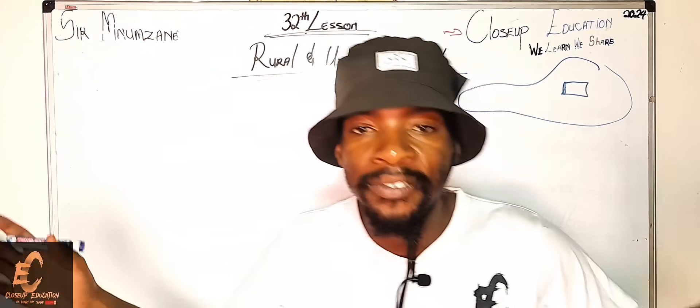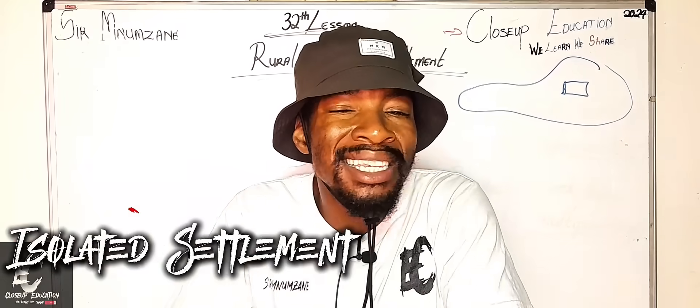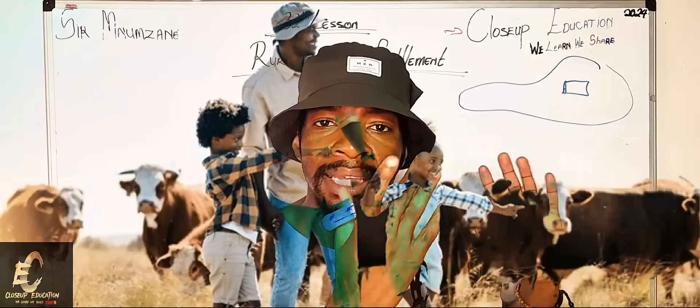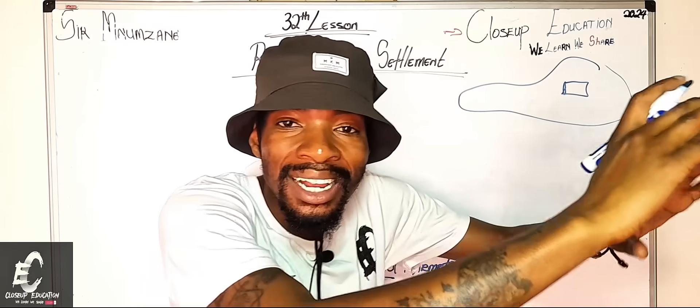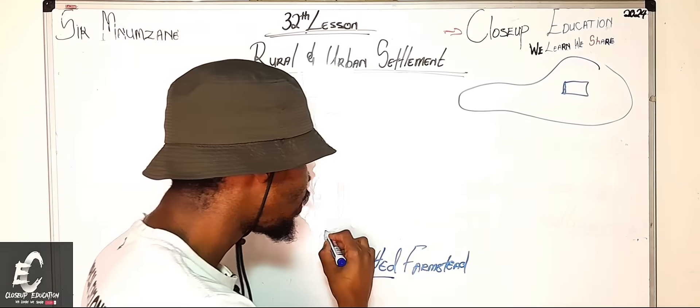Okay, guys, what is a definition? You just make a simple definition. You can say it is an isolated settlement which mainly focuses on primary activities. You definitely got it. You are done with your isolated farmstead.